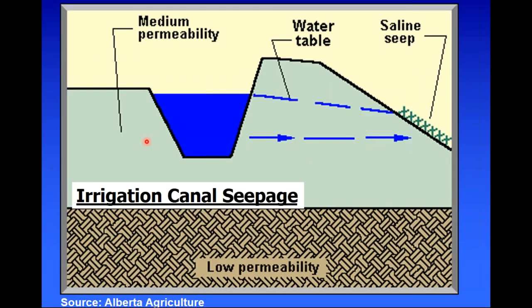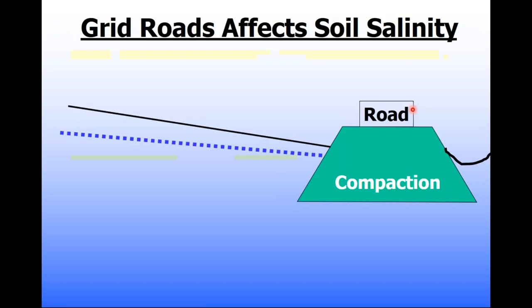A common type of salinity we used to have in southern Alberta with irrigation was canal seepage salinity. Most of our salinity in southern Alberta's irrigated areas really came from seeping canals. But by lining those canals and replacing smaller canals with pipelines, we have virtually eliminated salinity problems from canal seepage over the last 40 years.